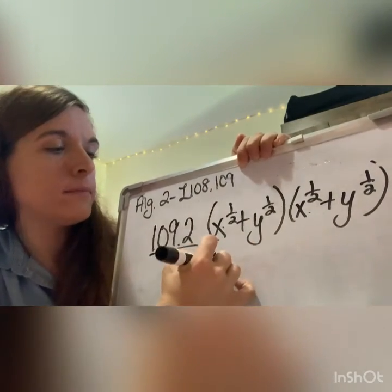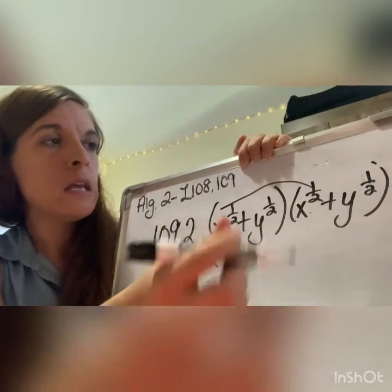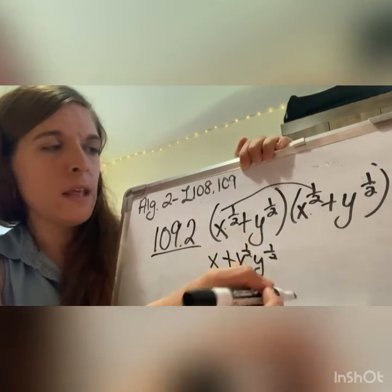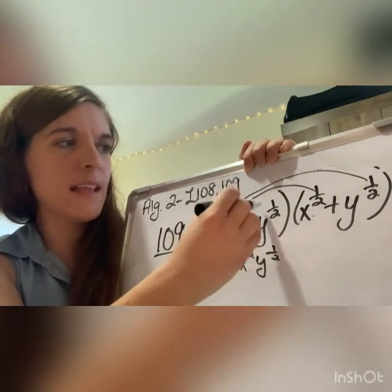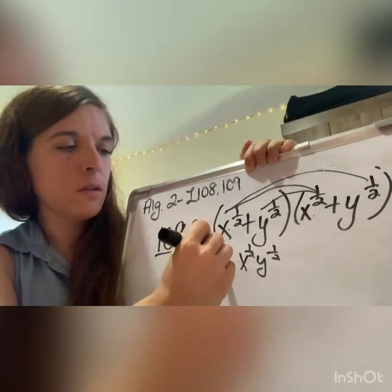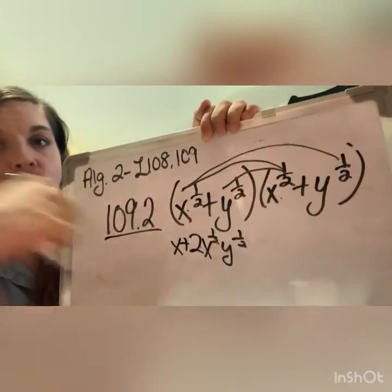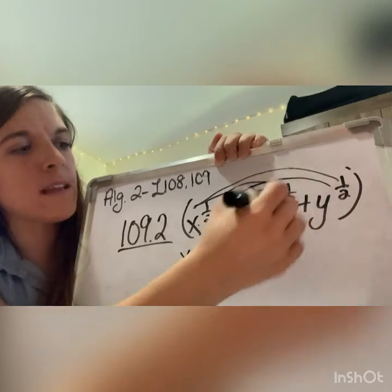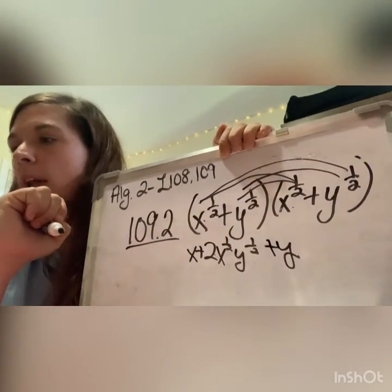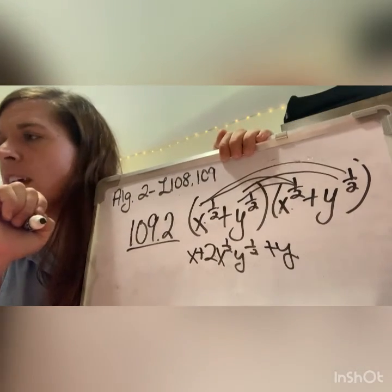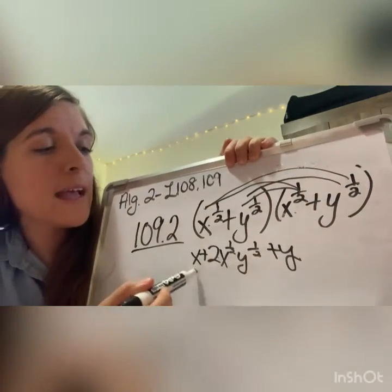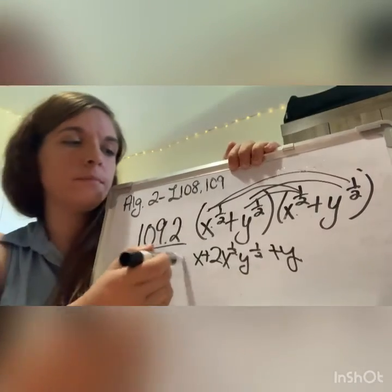So multiplying out: x to the one half times x to the one half — you add the exponents — gives x to the one. Then x to the one half times y to the one half gives two x to the one half y to the one half, because you get it from both cross-multiplications. Finally, y to the one half times y to the one half gives plus y to the one. So the answer is x plus two x to the one half y to the one half plus y.